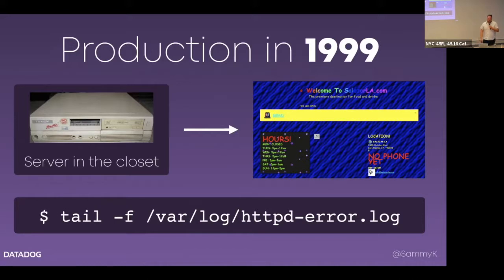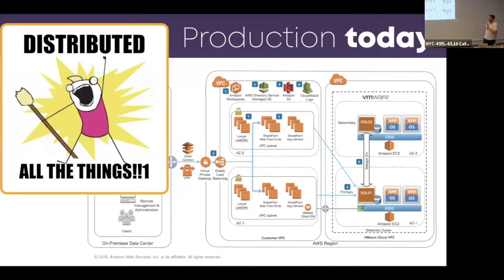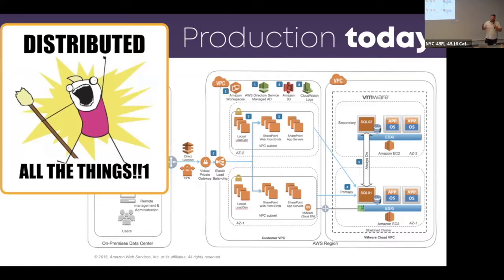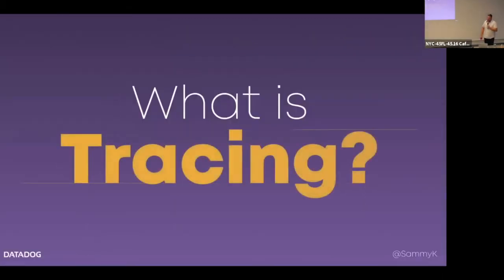But the production stack is a lot more complicated than the server in the closet these days, especially with a kind of structure where one request could be going through multiple hosts, multiple languages, all kinds of new services that just came out last week. It's really hard to get a good idea of what is happening in production. So we need a way of getting an eyeball in there, and one way we could do that is with tracing.